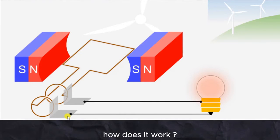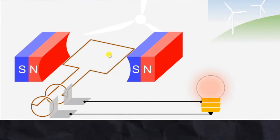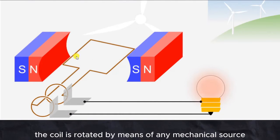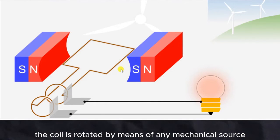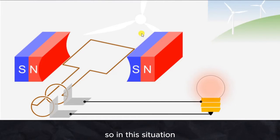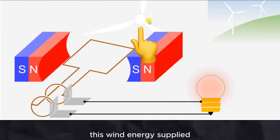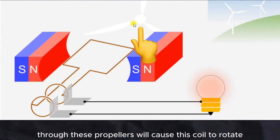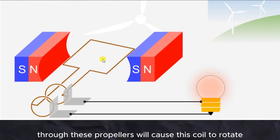How does it work? The coil is rotated by means of any mechanical source. In this situation, wind energy supplied through these propellers will cause this coil to rotate.